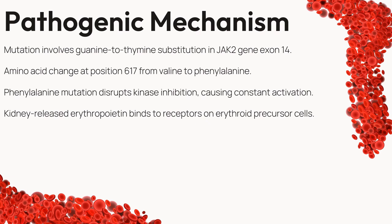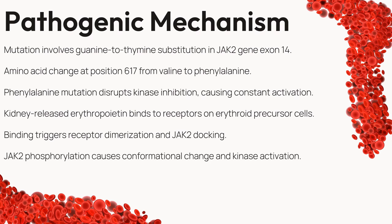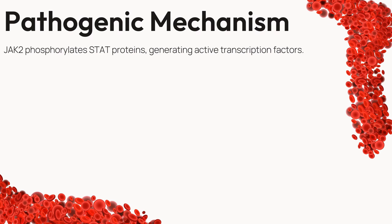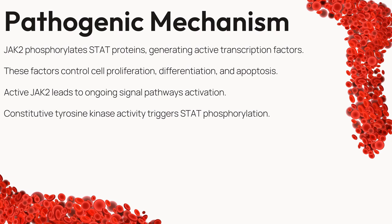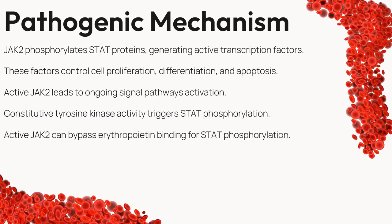We now encounter erythropoietin receptor activation, a key moment in the signaling process. Erythropoietin, released by the kidneys, binds to receptors on erythroid precursor cells, triggering receptor dimerization — a union crucial for cellular communication. This dimerization sets the stage for JAK2 activation through phosphorylation and conformational change. The phosphorylated JAK2 activates STAT proteins, which act as transcription factors orchestrating cellular processes. In PV, active JAK2 creates continuous activation of signaling pathways, with constitutive tyrosine kinase activity phosphorylating STAT proteins even bypassing the need for erythropoietin binding.